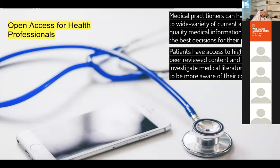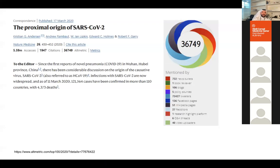An example: 'The Proximal Origin of SARS-CoV-2,' published in March 2020, has an Altmetric score of around 40,000 — featured in the news over 700 times and tweeted more than 70,000 times. This article was not necessarily open access, but it was free — showing the importance of having access to information. Now it's important to address some myths and misconceptions about open access and open science.